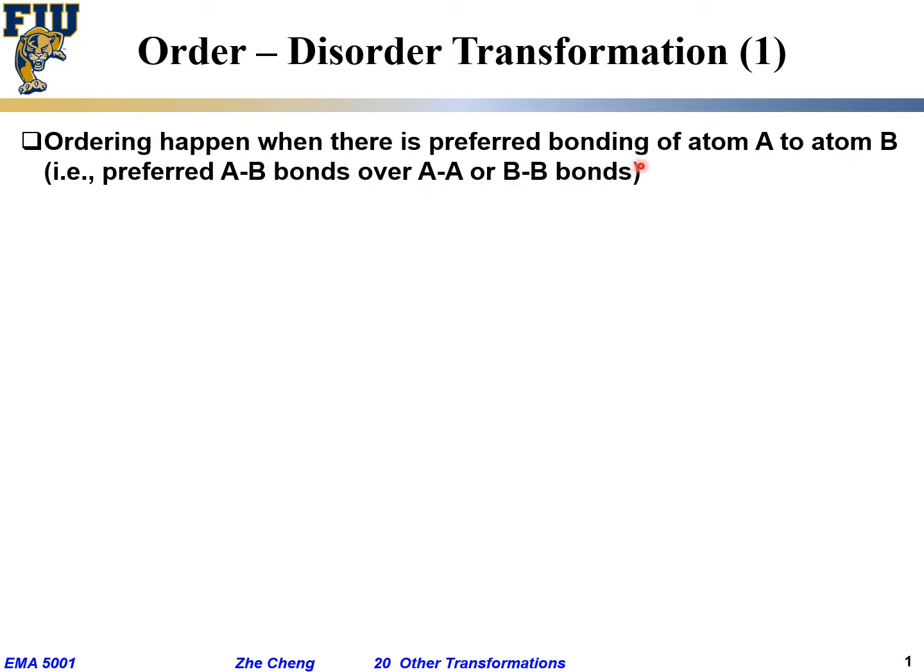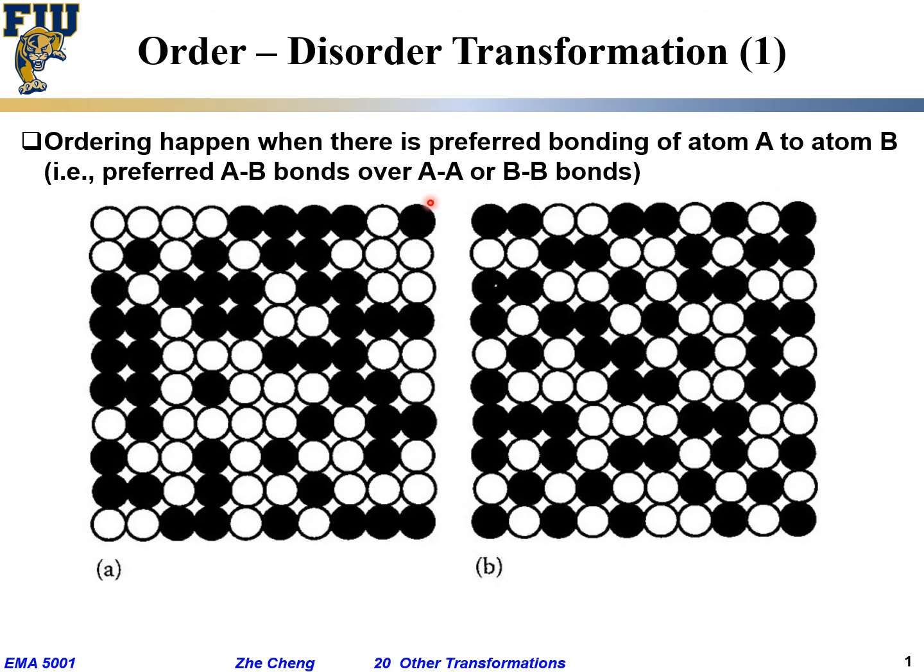Preferred bonding of atom A to the other atom, not to itself - preferred over bonding to the same atoms - that's so-called ordering. Here I give two kinds of schematic microstructure representations.